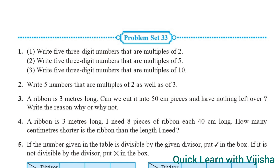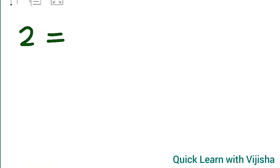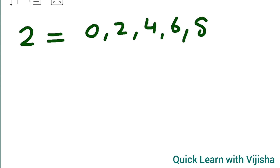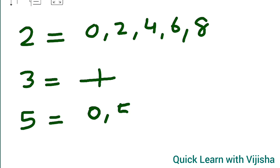Welcome to my channel. Today we will see Class 5 Problem Set 33. We should know the test of divisibility — a quick revision: to check divisibility by 2, the units place should have values 0, 2, 4, 6, or 8. To check divisibility by 3, add all the digits. For 5, units place should be 0 or 5. For 10, units place should be 0. The detail video link is in the description box.